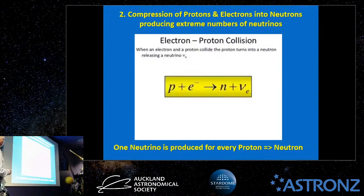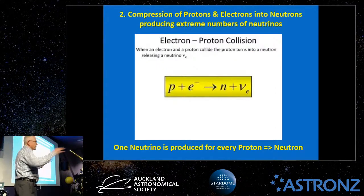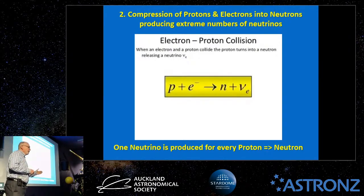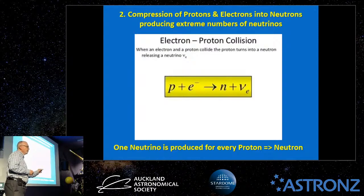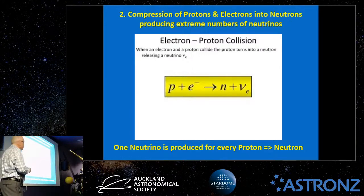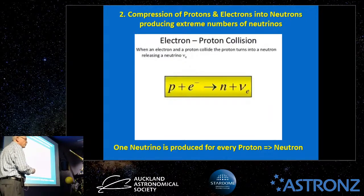With the enormous forces of collapse, protons and electrons are jammed together to create neutrons and neutrinos. A neutrino is produced for every proton-to-neutron conversion, and given the astronomical numbers of protons and electrons in the collapsing core, vast numbers of neutrinos are generated. Although neutrinos are ghostly and rarely interact — they need a near-direct hit on an atomic nucleus — they carry away most of the energy from the supernova.